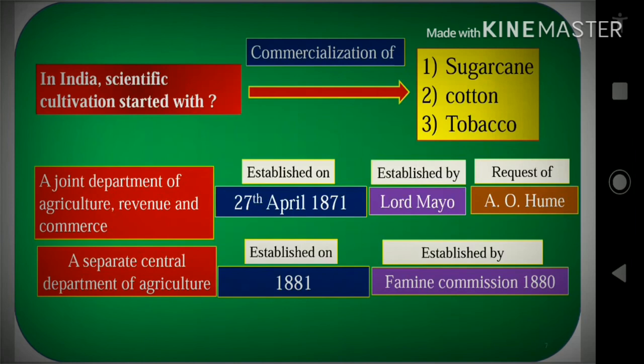Then come to a Separate Central Department of Agriculture, established in 1881. In 1881, a Separate Central Department of Agriculture was established by the Famine Commission of 1880. The Famine Commission 1880 established the Separate Central Department of Agriculture. Thank you.